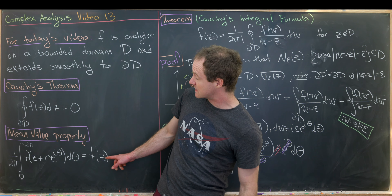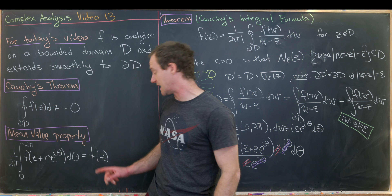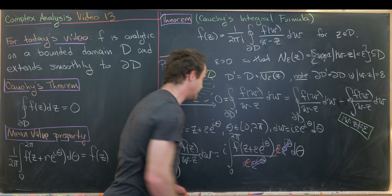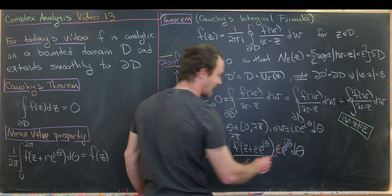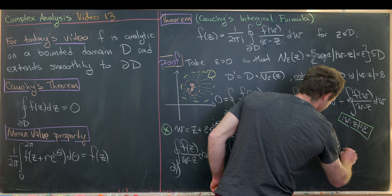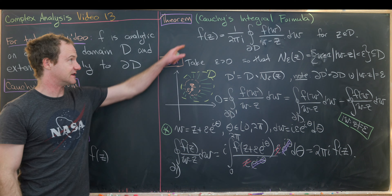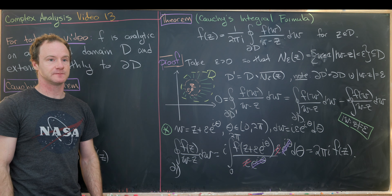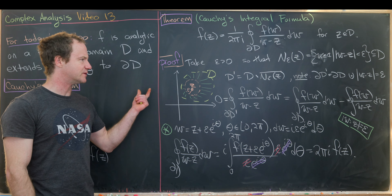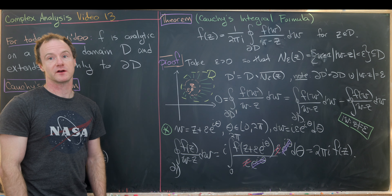By the Mean Value Property, that integral equals 2π times f(z). Together with the factor of i, we have 2πi times f(z). Solving for f(z) gives us exactly the desired result. That finishes the proof of Cauchy's Integral Formula.